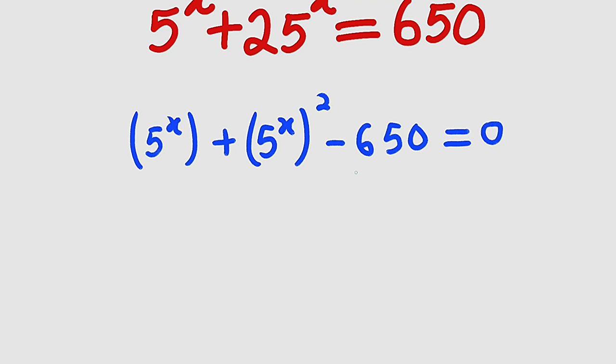Let us think of two numbers that can be multiplied to get negative 650, but when you add them together, you get positive 1, which is the coefficient of 5 to the power of x. And the numbers are 26 and negative 25.